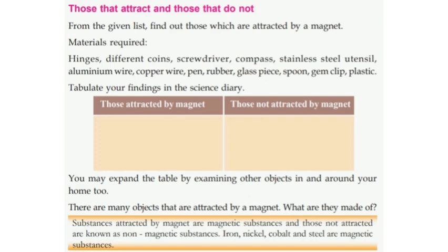There are many objects that are attracted by a magnet. What are they made of? They are made using iron, steel, cobalt, and nickel.